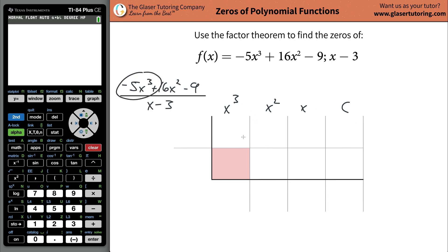Now, the coefficient of the x cubed term is a negative 5, the coefficient of the x squared term here is a 16, the coefficient of your x term, oh, wait a minute, there is no x term. So guess what the coefficient is? Zero. Don't skip it. You've got to plug it in. And the constant is going to be a negative 9. Great.